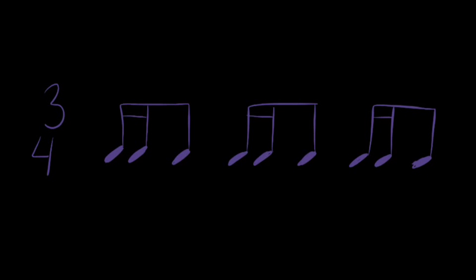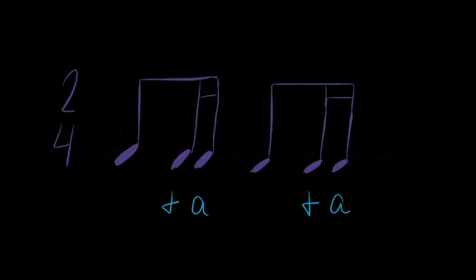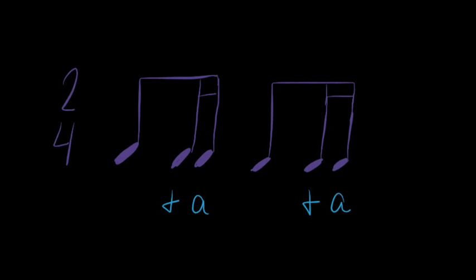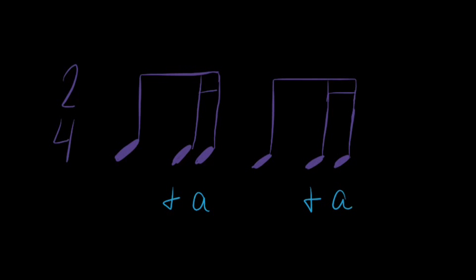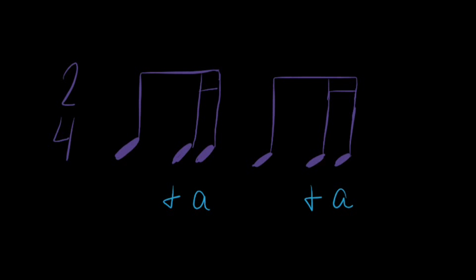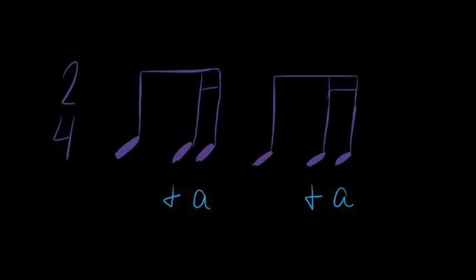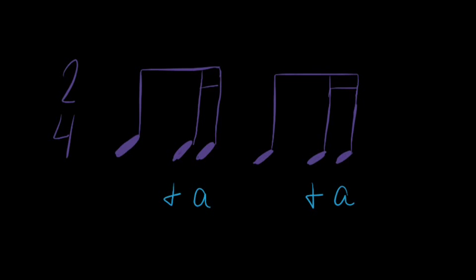Let's learn how to count this. Using what we've learned, we know that sixteenth notes are labeled 1-e-and-a. We also know that the last two sixteenth notes of a beat are labeled and-a. These notes are the last two sixteenth notes of each of their beats. That is why they are labeled and-a.